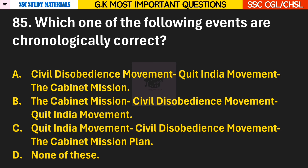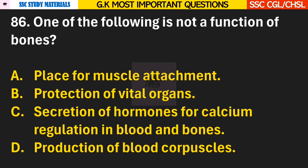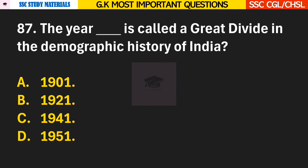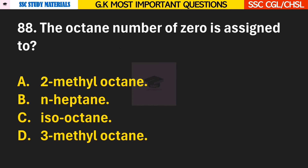Question 86: Which one of the following events is chronologically correct? Answer A — Civil Disobedience Movement, Quit India Movement, and then the Cabinet Mission. Question 86: One of the following is not a function of bones? Answer C — Secretion of hormones for calcium regulation in blood. Question 87: The year dash is called a great divide in the demographic history of India? Answer B — 1921. Question 88: The octane number of zero is assigned to? Answer B — N-Heptane.